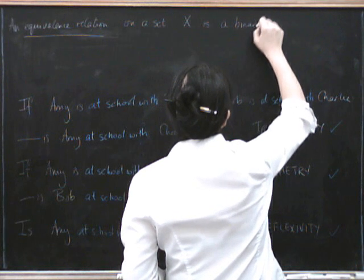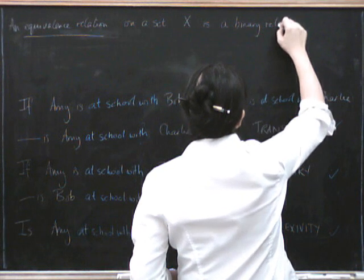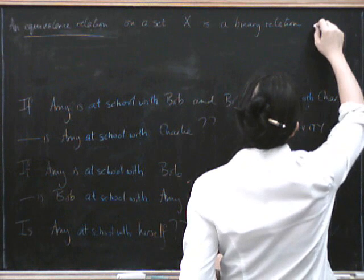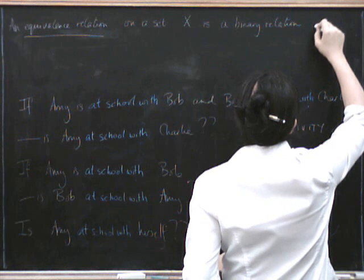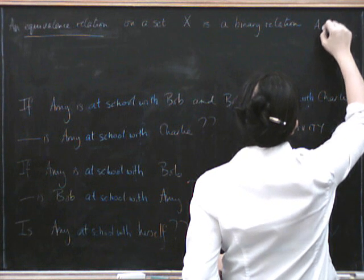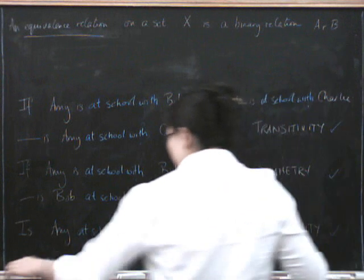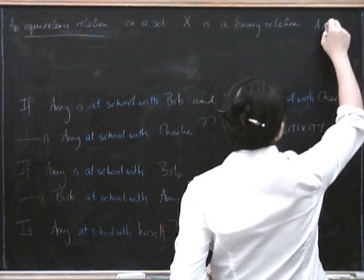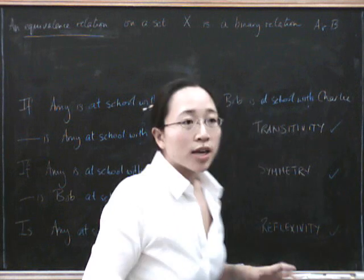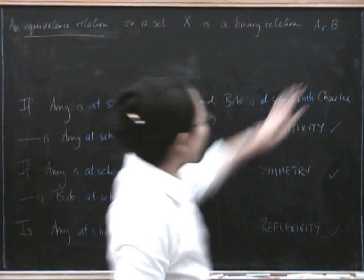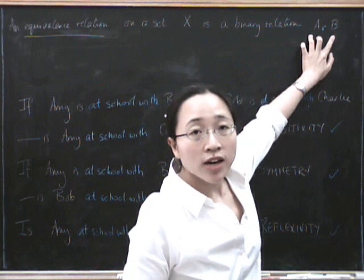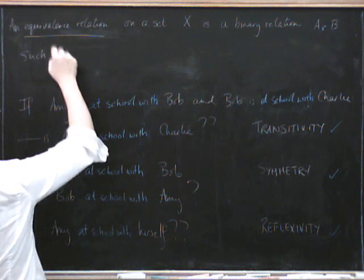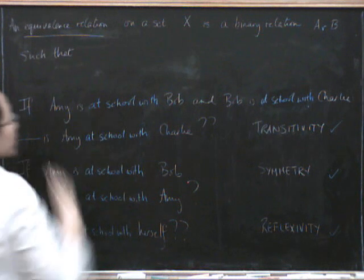I might write this as A is related to B. So that little R there, I'll do it in blue, stands for some kind of relation between A and B. This means that A is related to B by this relation, such that the following things are true.